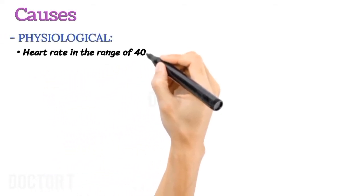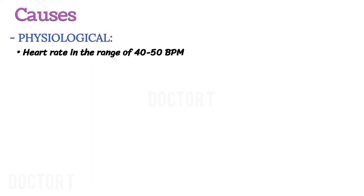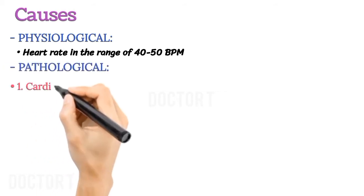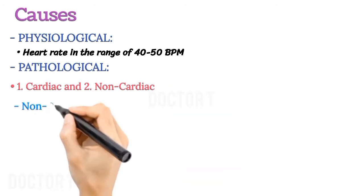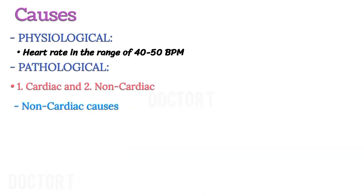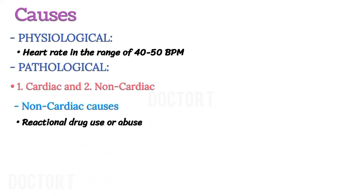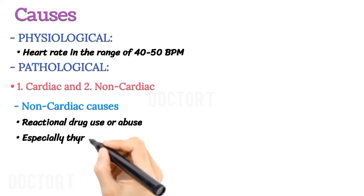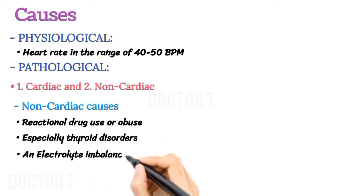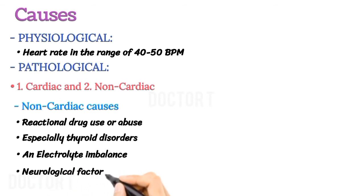Causes of bradycardia. Bradycardia has multiple causes. Physiological: a well-trained athlete may have a heart rate in the range of 40–50 beats per minute — these are called functional or relative bradycardia. Pathological causes are divided into cardiac and non-cardiac causes. Non-cardiac causes are usually secondary, including recreational drug use or abuse, metabolic or endocrine disorders especially thyroid disorders, electrolyte imbalance, and neurological factors.